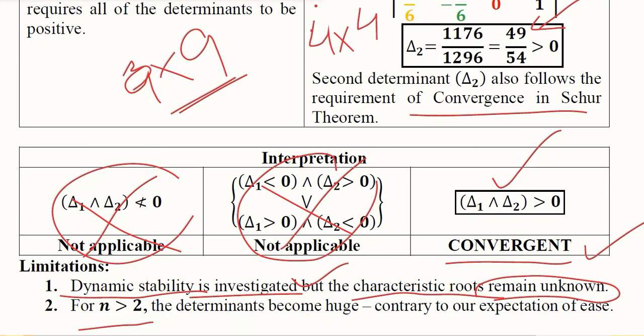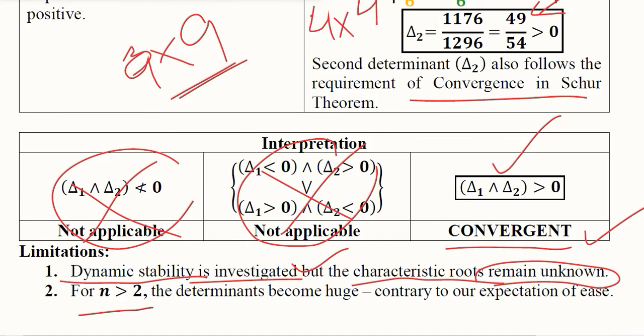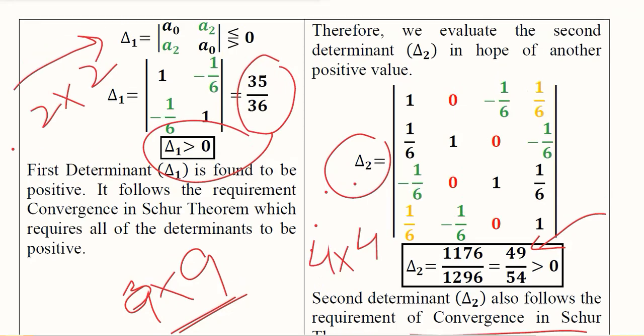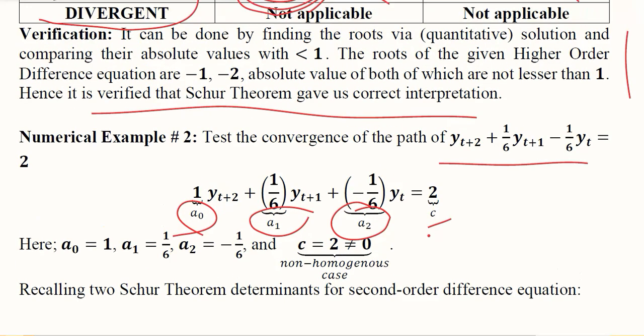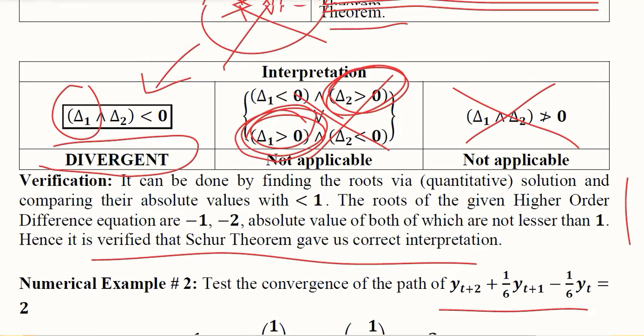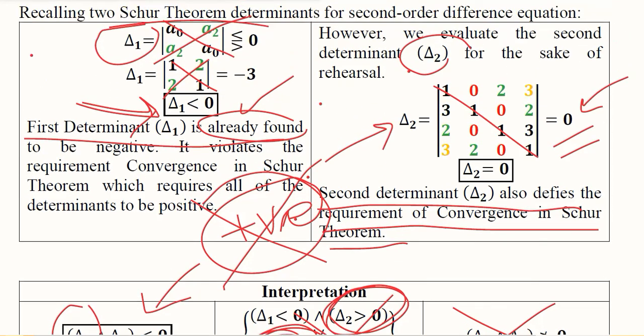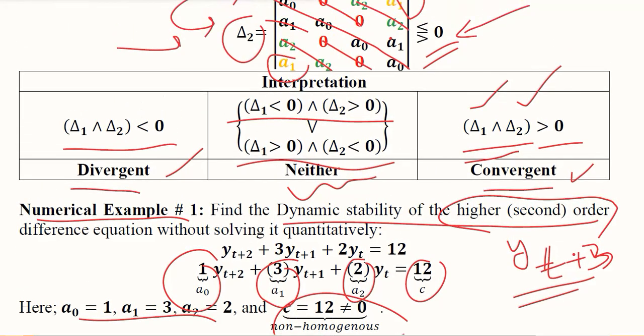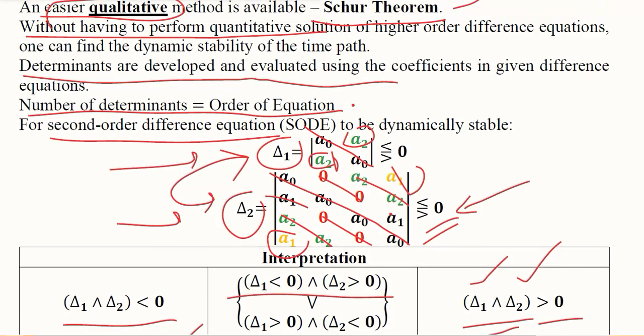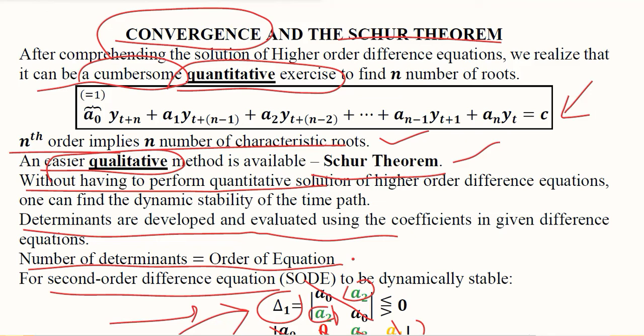We have this limitation of Schur's theorem that as the order of the difference equation increases, it becomes difficult to deal with those determinants that can become huge. This is something we were not expecting, against our expectations of ease because we wanted to avoid calculations. However, this is another method that can make things simple and avoid the calculation of the roots and their confusion regarding dynamic stability. This is known as Schur's theorem which is used for the judgment of the dynamic stability of higher order difference equations.